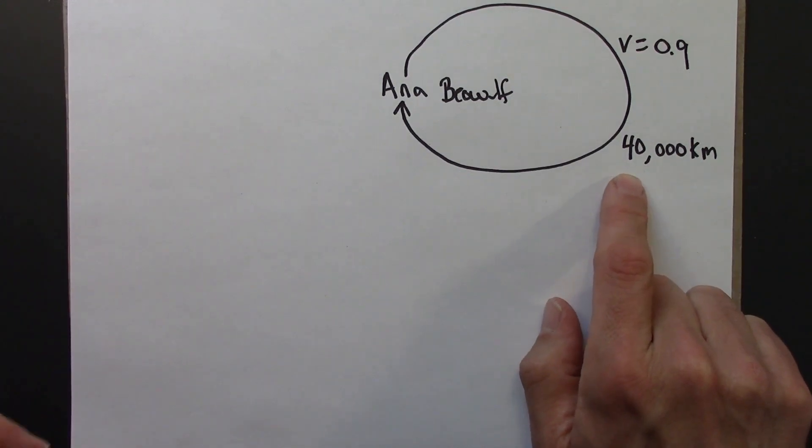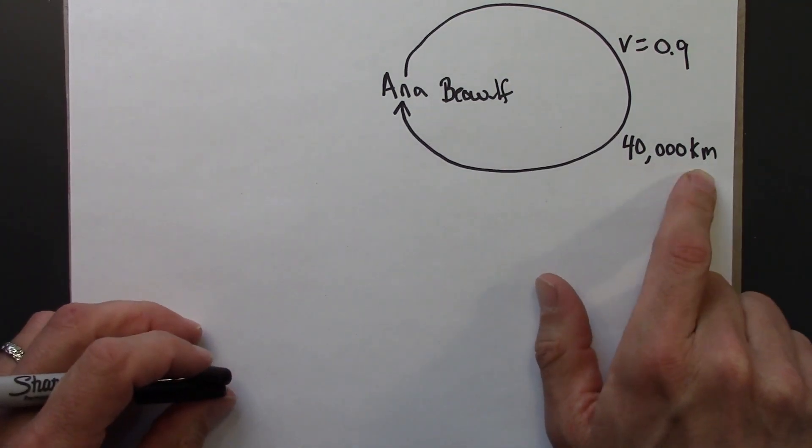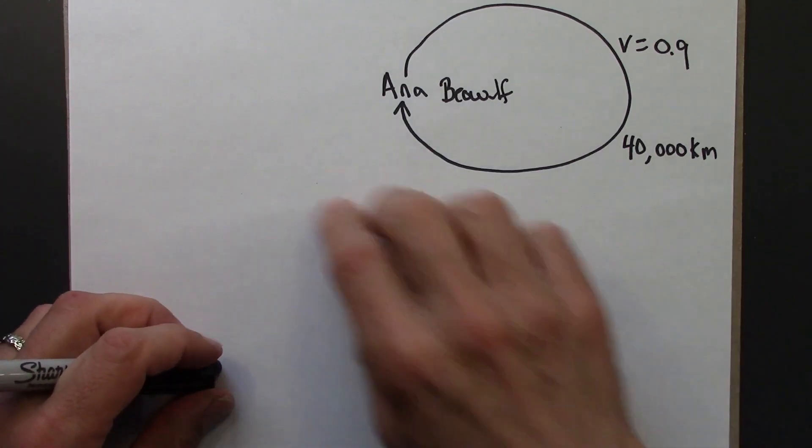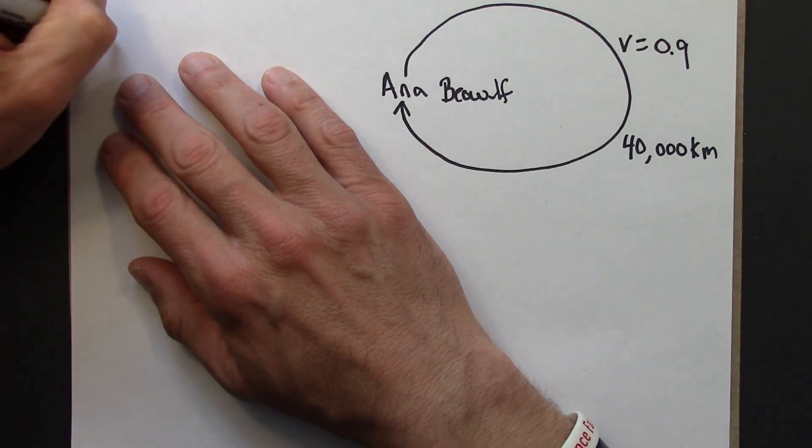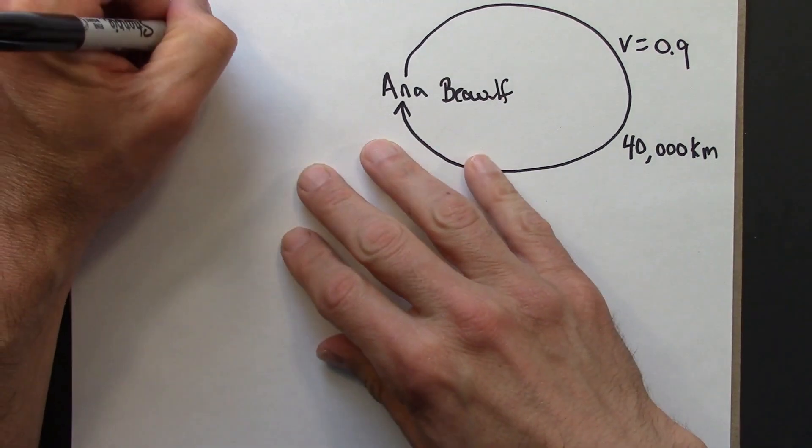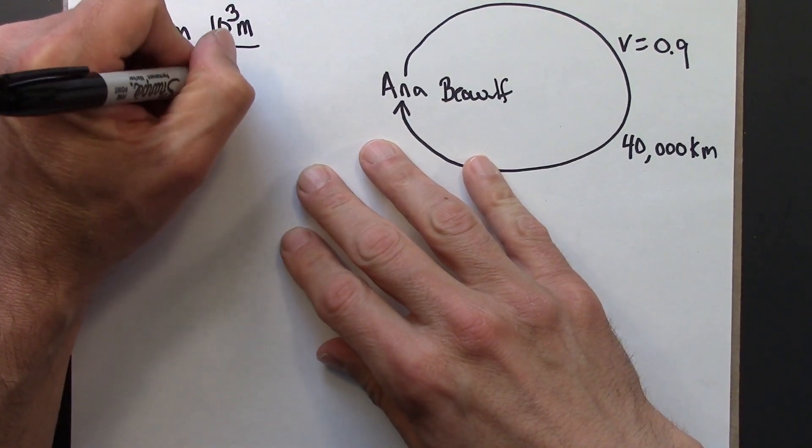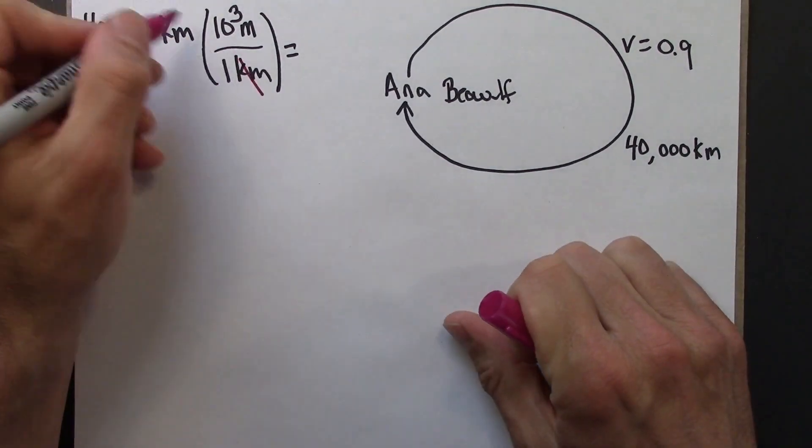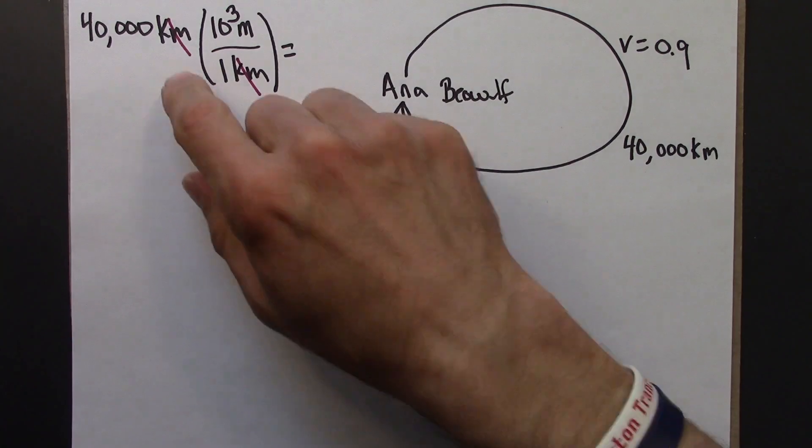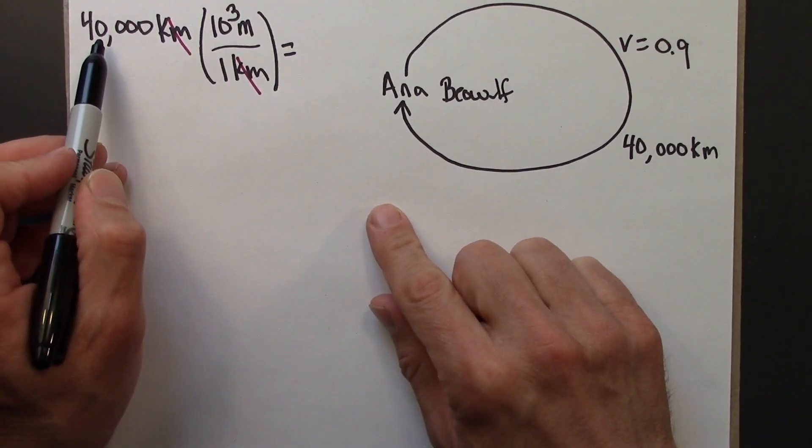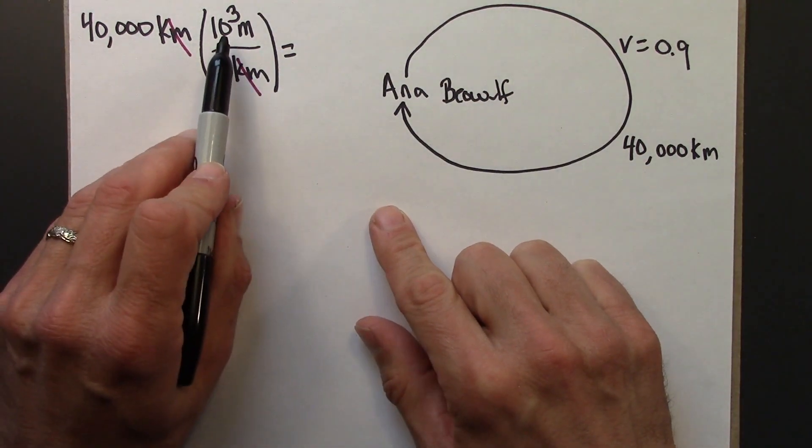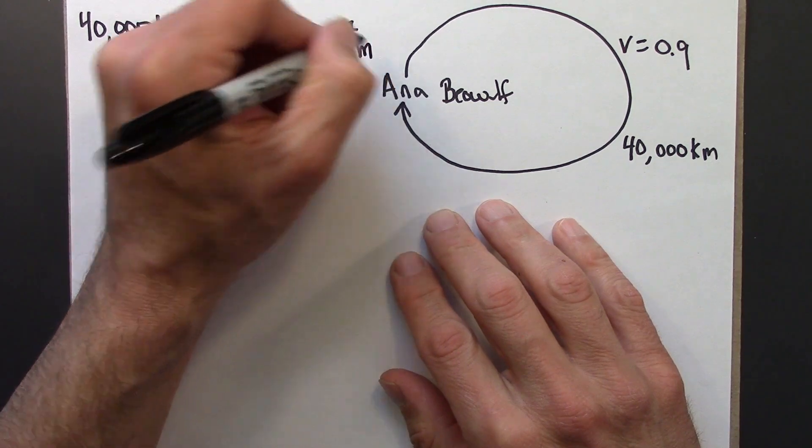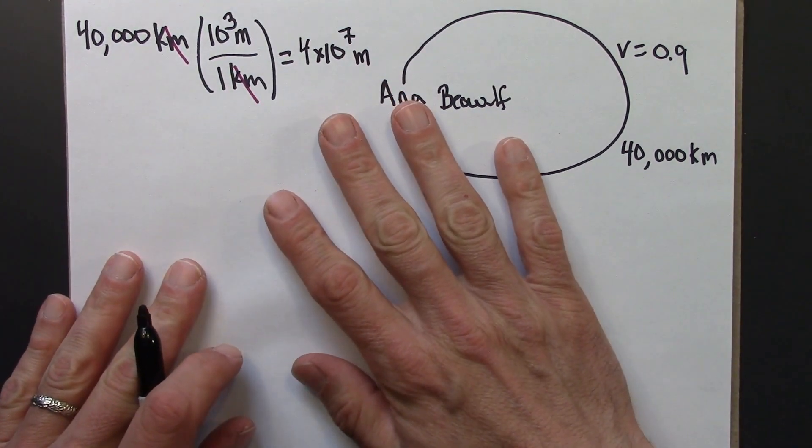The first thing I'm going to do is deal with this 40,000 kilometers. We want to get everything into special relativity units, so I'm going to convert 40,000 kilometers into meters and then meters into seconds. So 40,000 kilometers, there are 10 to the 3 meters in one kilometer, so kilometers will cancel. 40,000 is 10 to the 4, so I have 4 times 10 to the 4 times 10 to the 3, the exponents add. So this is 4 times 10 to the 7 meters.